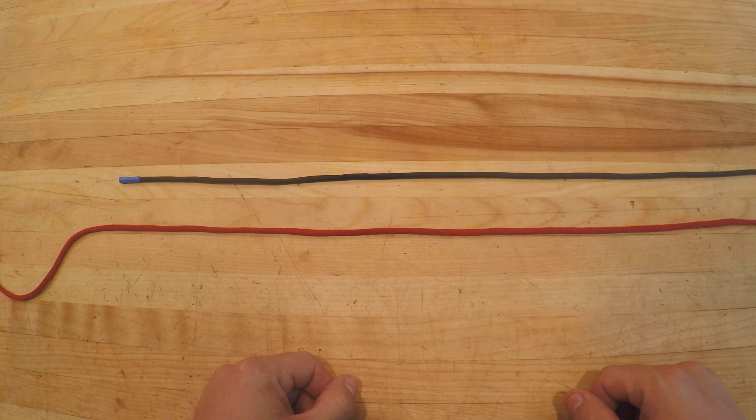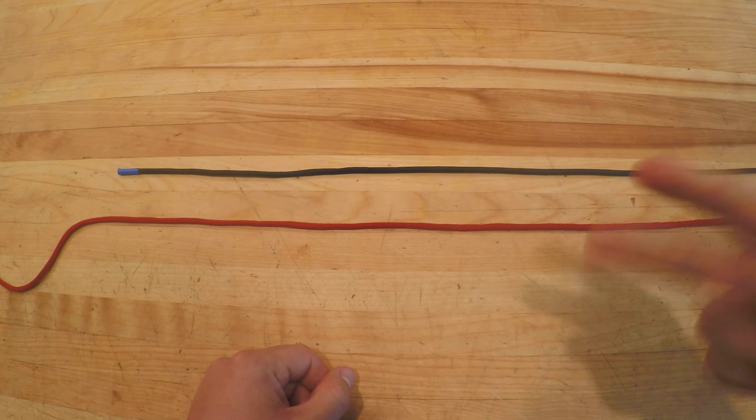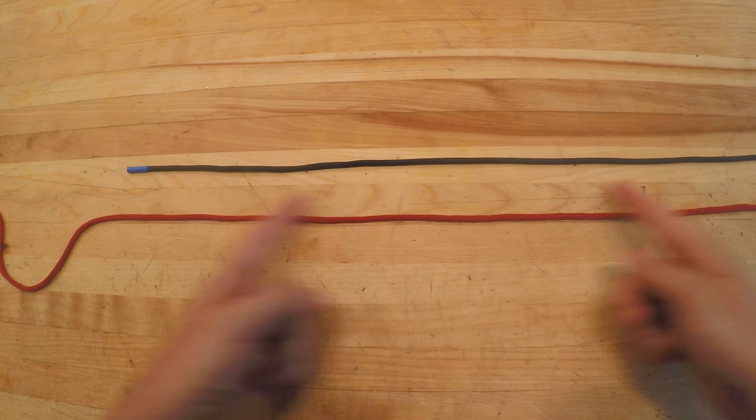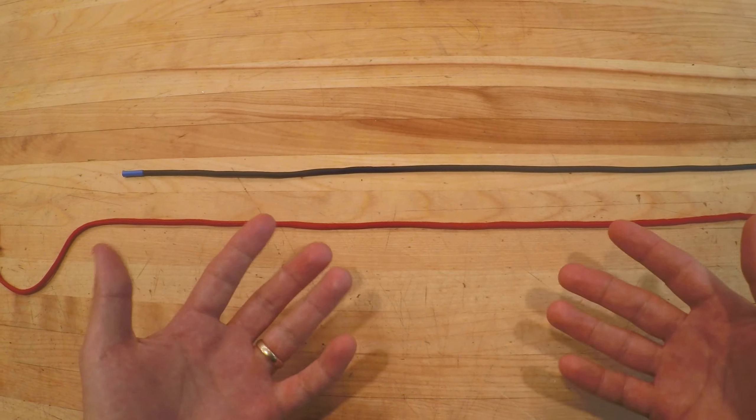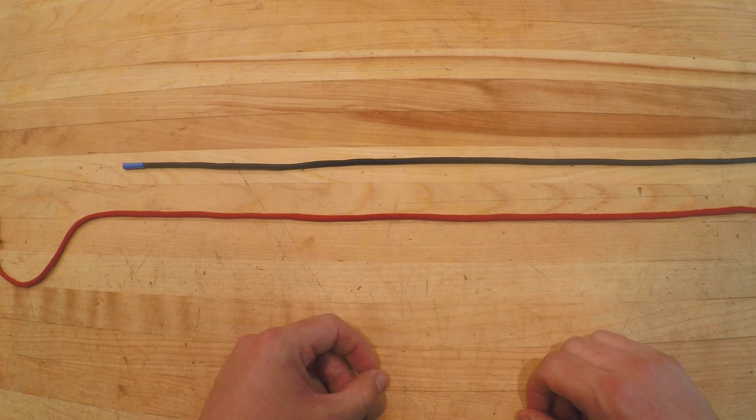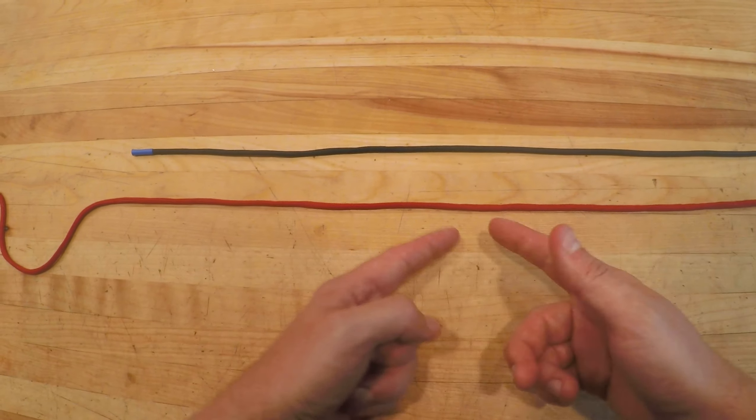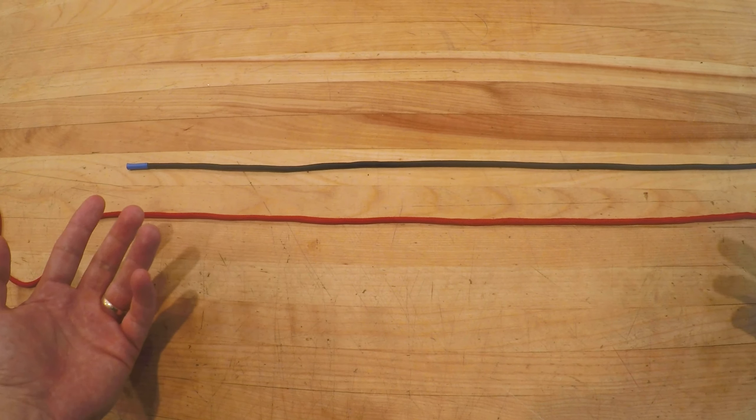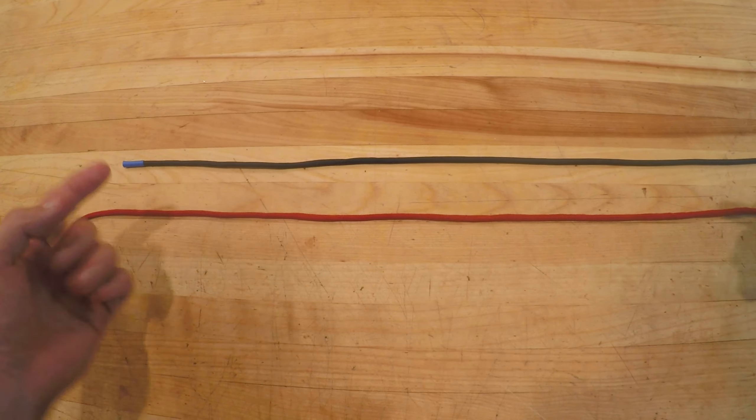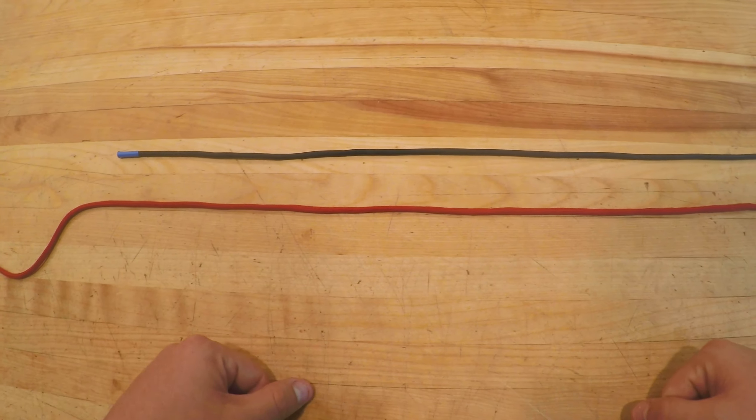The second version of this knot is known as the double fisherman and all we do is add a second overhand knot to drastically increase its strength, allowing it to be used during dangerous activities such as rock climbing. In order to tie this we're going to have the same setup as before: two ropes of the same width or diameter, parallel to each other with working ends traveling in opposite directions.